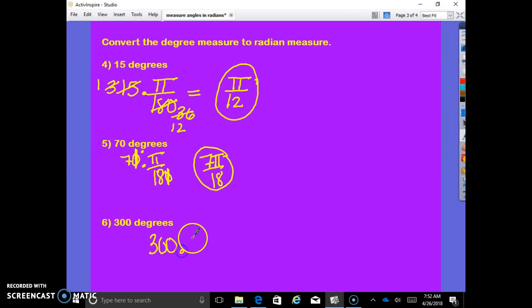300 degrees times pi over 180. We're converting into radians. Because we're converting into radians, pi is always on top. 300 and 180. You can get rid of a zero on both of them. 3 goes in here 10 times. 3 goes in here 6 times. 2 goes in here 5 times. 2 goes in here 3 times. 5 pi over 3. That's how you would do it on a non-calculator section.